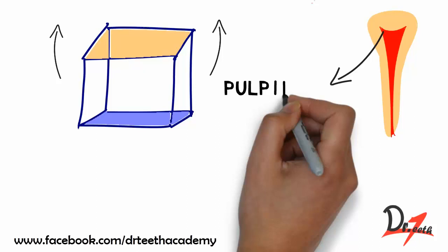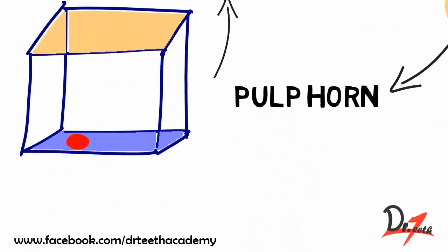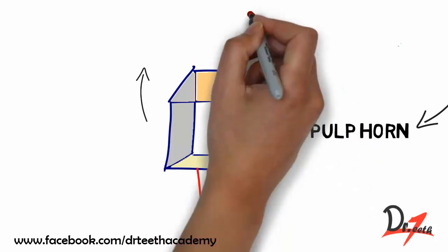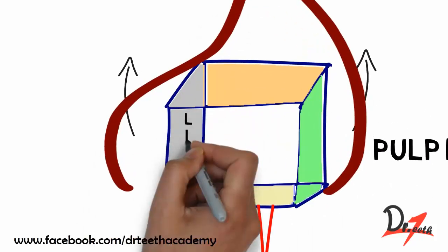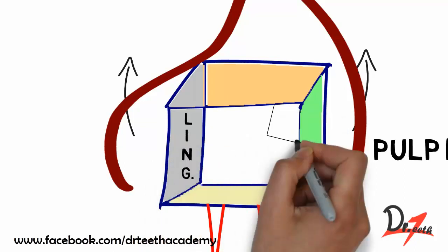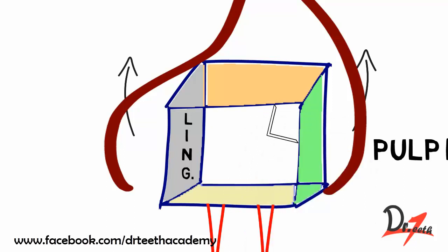These extensions under the cusps are called pulp horns. The floor has openings called canal orifices that lead into the root canals. The walls are named according to the corresponding tooth surface — for example, the lingual wall corresponds to the lingual surface. Naming the angles of the pulp chamber is done by joining the names of the walls that form that angle.